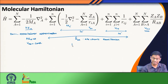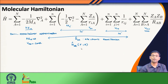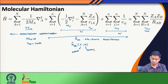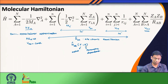This electronic Hamiltonian depends explicitly on the electronic coordinates given by small r, but it also has a parametric dependence on nuclear coordinates, capital R. This means it has explicit dependence on r and parametric dependence on R. What do I mean by parametric dependence? We say that we have defined this electronic Hamiltonian for a particular nuclear configuration.